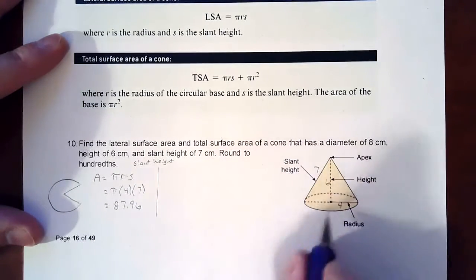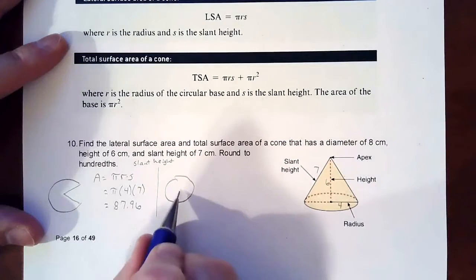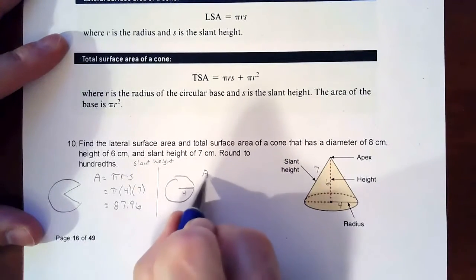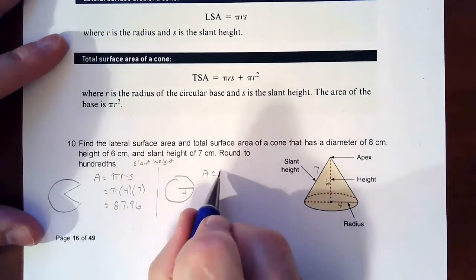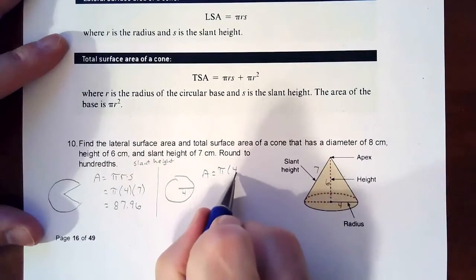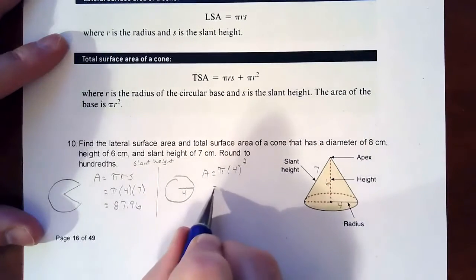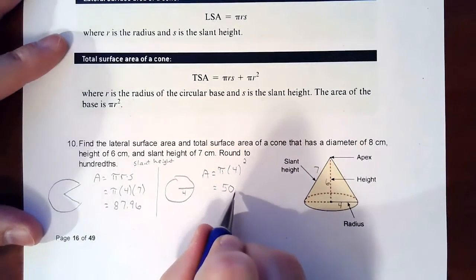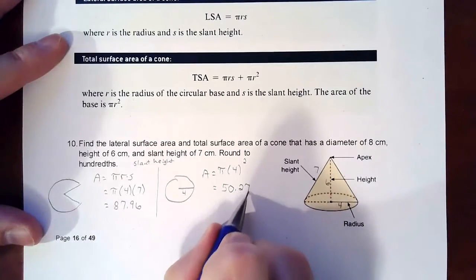The other part is the base, which is a circle with radius 4. The area is πr², which is π times 4 squared, which turns out to be 50.27.